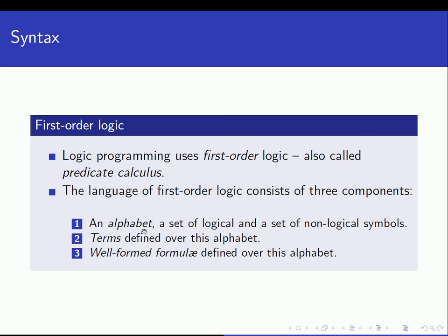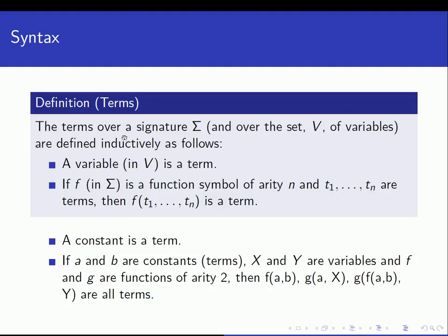The second part covers terms defined over this alphabet. Terms over sigma (the function symbols) and the set V of variables are defined inductively: a variable is a term, and if f in sigma is a function symbol of arity n, and t1 up to tn are terms, then the composite term f(t1, ..., tn) is a term as well.